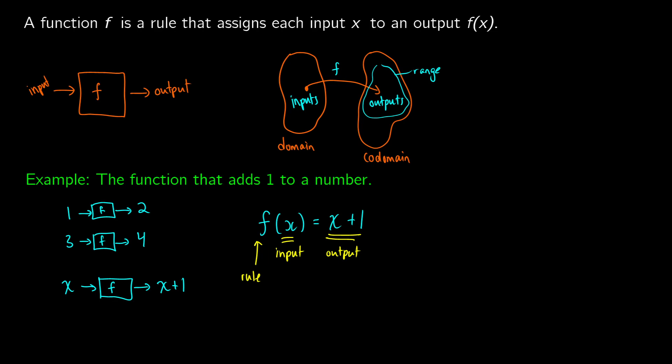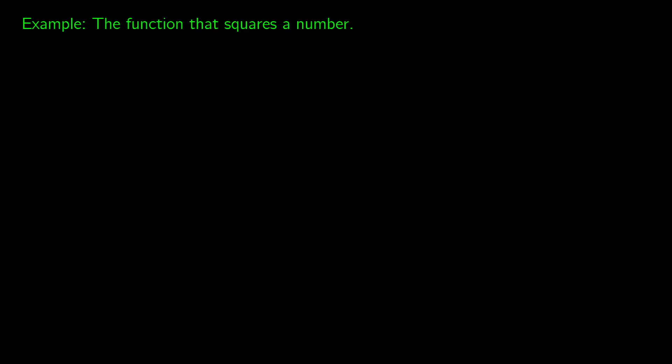So we have function machine and we have function notation. Let's see another example of this. What about the function that squares a number? What would this look like? Well if we put one in into our little function machine, we would get one squared, which is just one. If we were to put two in our function machine, we would get two squared, and that would be four.